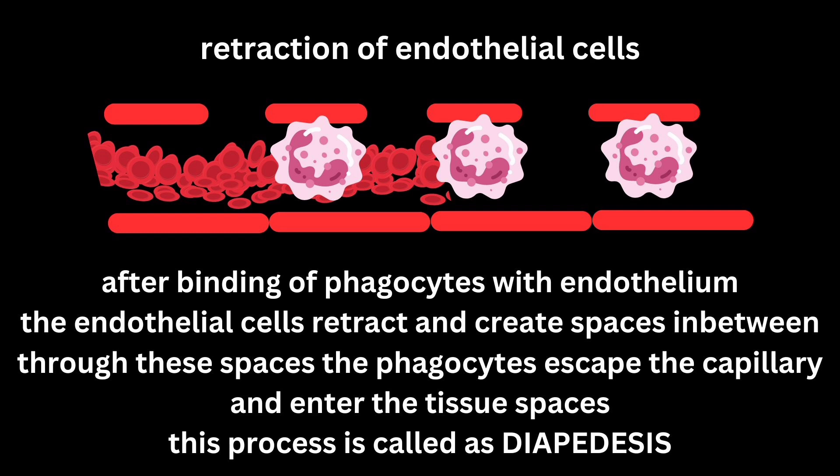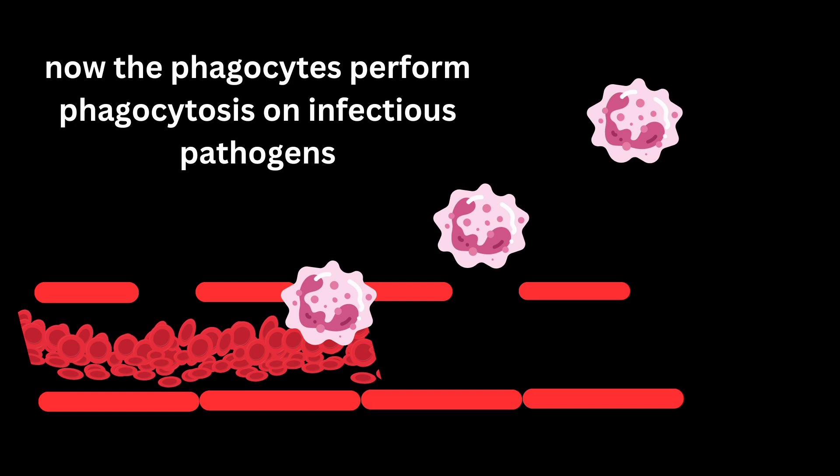Through these spaces, fluids and cells present in the blood can escape and migrate towards the tissue spaces. This retraction of endothelial cells is caused by chemical mediators such as histamine. The process of migration of white blood cells from the blood into the tissue spaces is called diapedesis. In the diagram you can see the escaping of white blood cells through the spaces created between endothelial cells, as they migrate into the tissue spaces.